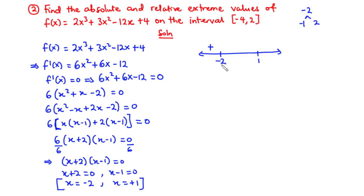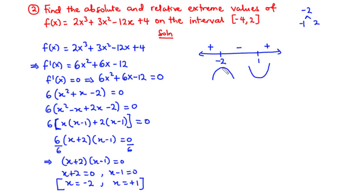We pick x = 0 between -2 and 1: (0 + 2)(0 - 1) = (2)(-1) = -2, which is negative. Then we pick x = 2, greater than 1: (2 + 2)(2 - 1) = (4)(1) = 4, which is positive. So the function increases, then decreases, then increases again. Therefore the function has a relative maximum at x = -2 and a relative minimum at x = 1.